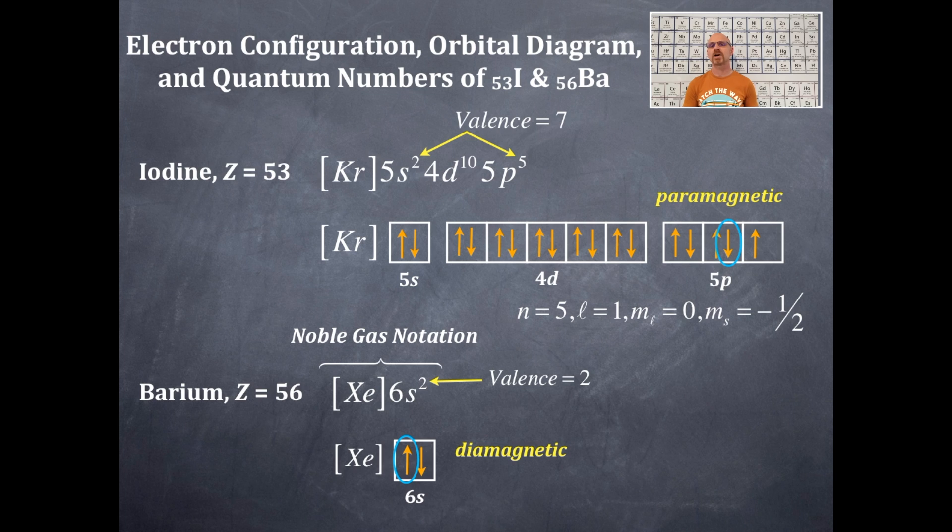I'm going to circle an electron right here. And now you're going to pause the video and write the set of four quantum numbers. That's n, l, m sub l, m sub s of that circled electron. And here they are. Here are the set of four quantum numbers to represent that circled electron.